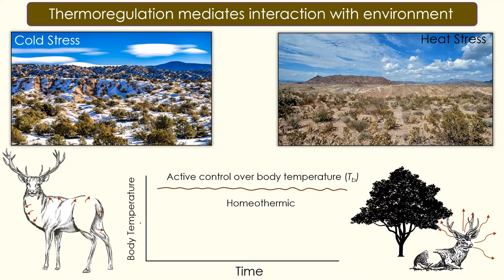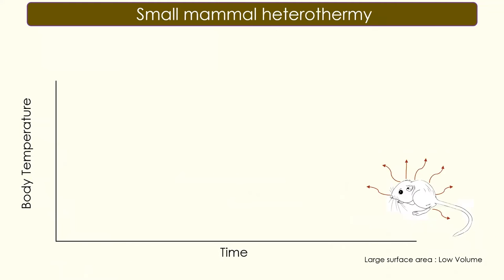Even the most homeothermic animals will have slight deviations in their body temperature across time. As humans, you might notice this especially during the winter and fall months, where when you wake up your body temperature is just a little lower than the day before when you were active. For small mammals with a large surface area and a relatively low volume to produce heat, it becomes harder to maintain that nearly constant body temperature and afford those costs.